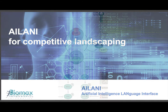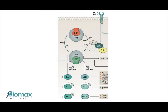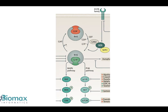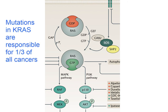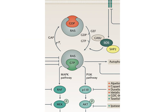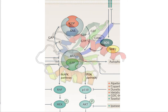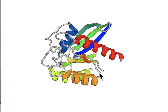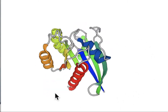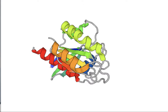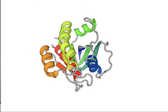Ailani for Competitive Landscaping. KRAS is the most frequently mutated oncogene in cancer and encodes a key signaling protein, a small GTPase, in tumors. Mutations in KRAS are responsible for a third of all cancers and for more than three decades investigators have been searching for RAS inhibitors. Even 10 years ago, the field of RAS inhibitors was so elusive that RAS was termed undruggable. Here we have the crystal structure of human KRAS G12C covalently bound to AMG510, one of the first optimized allele-specific covalent inhibitors that has shown very promising clinical activity.